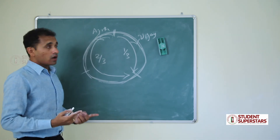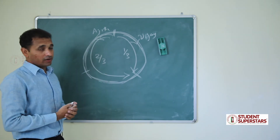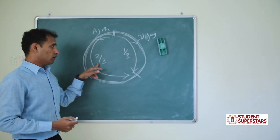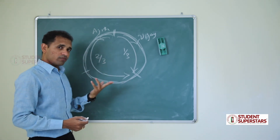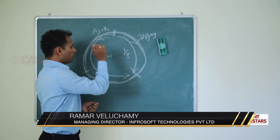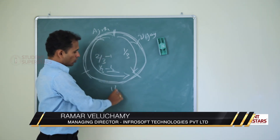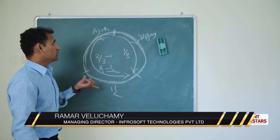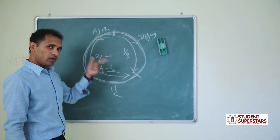Now the question is how much time Ajit will take to complete the entire circular track. He is covering two thirds in one minute, so to cover the remaining one third it takes half a minute. Two thirds takes one minute, one third takes half a minute — together one and a half minutes. So Ajit will take one and a half minutes to complete the entire circular track.